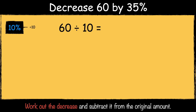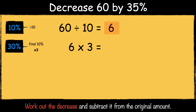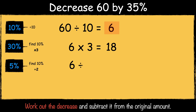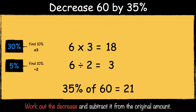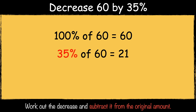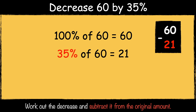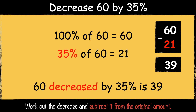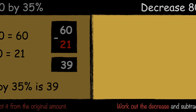Here's the next example: decrease 60 by 35%. First we find 10% of 60 by dividing it by 10. 60 divided by 10 is 6. Then we multiply the answer by 3 to find 30%. 6 times 3 is 18. Then if we divide the 10% answer by 2 we can find 5%. 6 divided by 2 is 3. So 35% of 60 is 21. 60 take away 21 is 39. So 60 decreased by 35% is 39.